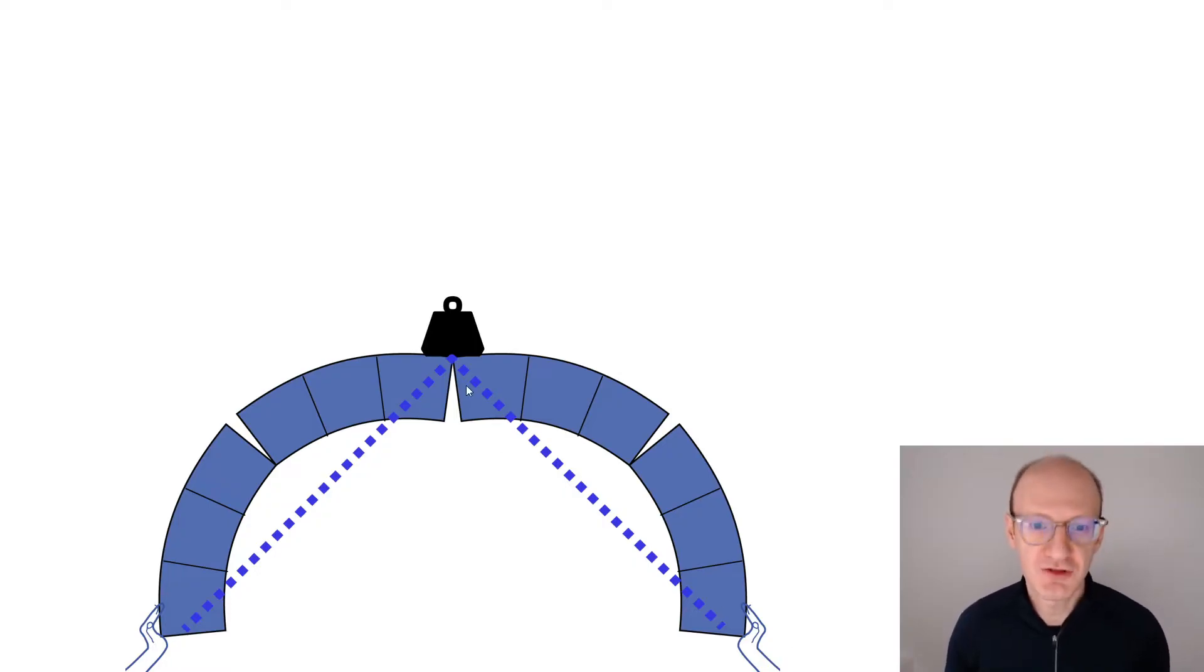And if your structure is an arch and that's a masonry blocks that cannot carry bending, then if the thrust line leaves the structure, then the arch wants to bust out, it wants to buckle outwards.